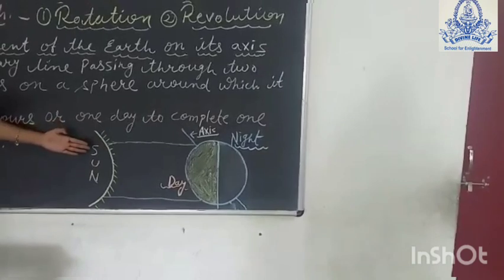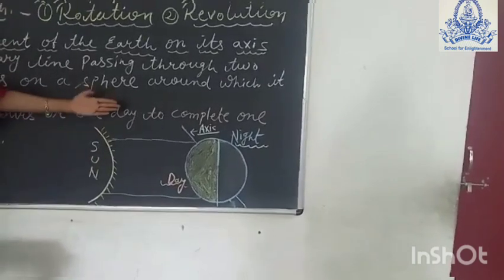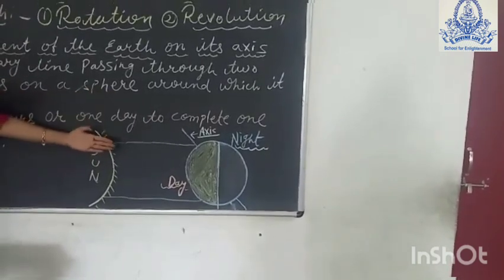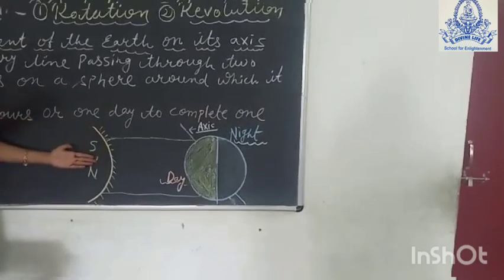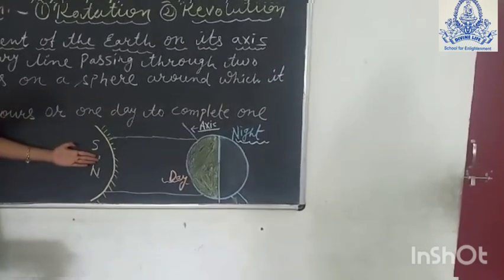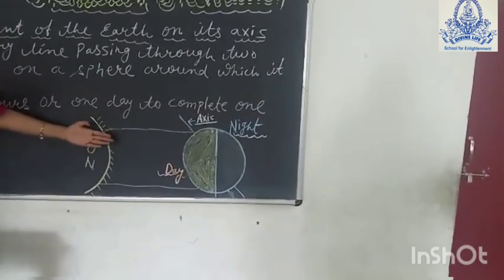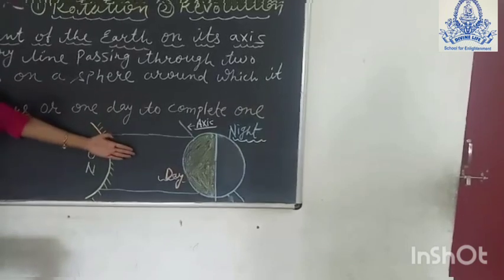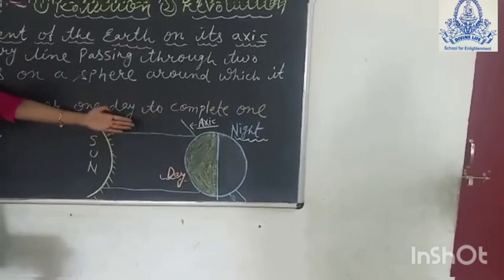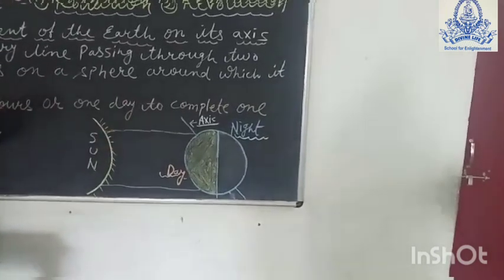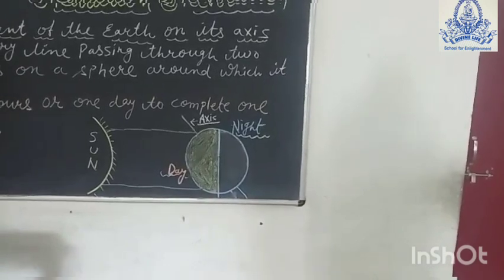The rotation of the earth causes day and night. Due to its spherical shape, only half of the earth receives light from the sun at a particular time. This half has day, while the other half which is turned away from the sun is in darkness and has night.